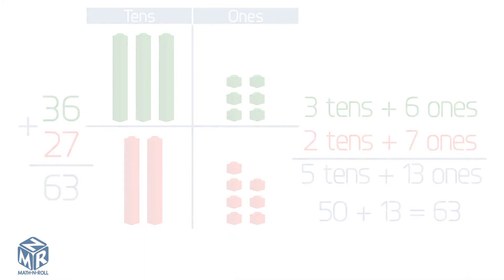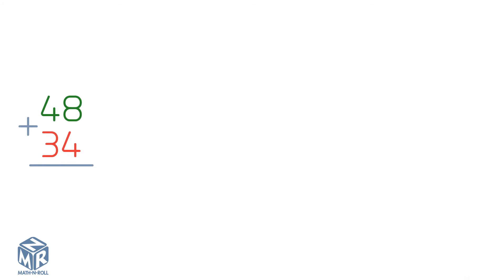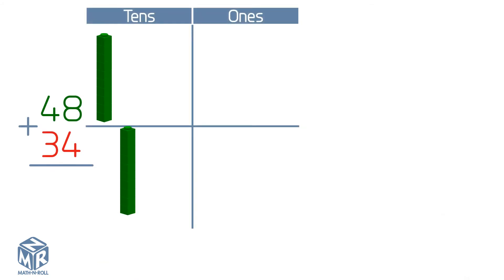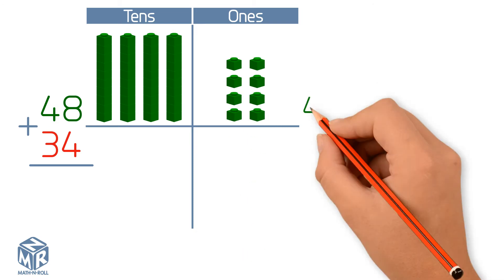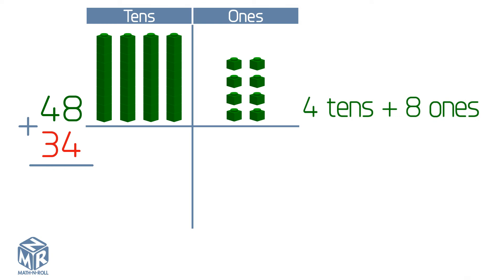Let's try another one. 48 plus 34. 48 has four tens and eight ones. 34 has three tens and four ones.